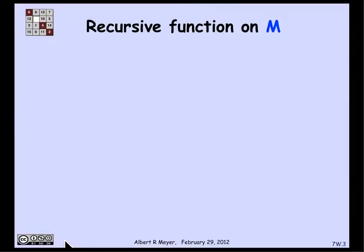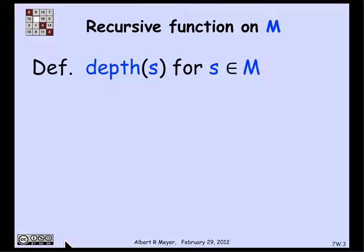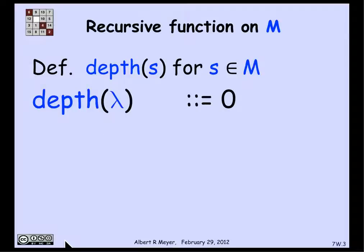Let's look at an example to make this recipe explicit. Consider a recursive function on the set of matched brackets — defining the depth of a string, meaning how deeply nested the successive pairs of left and right brackets are. The depth of the empty string is 0, since it has no brackets.